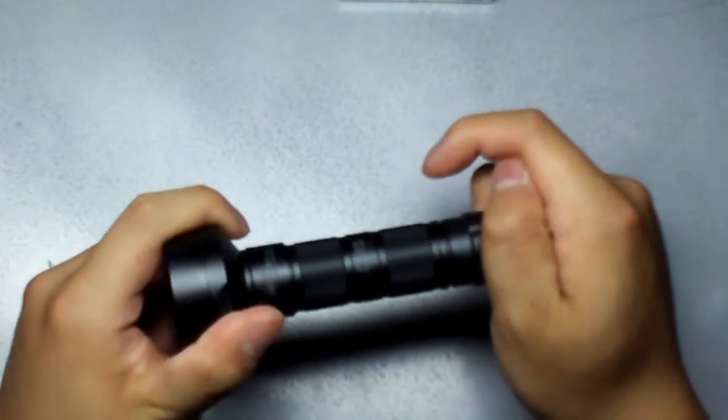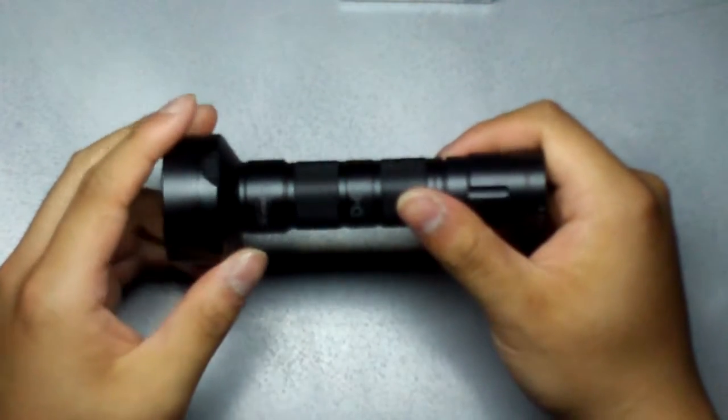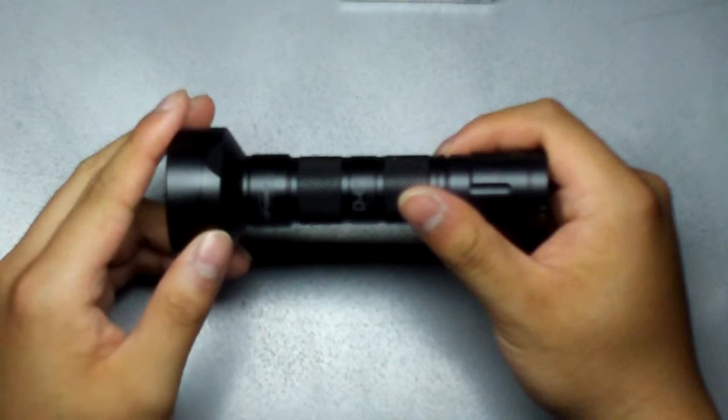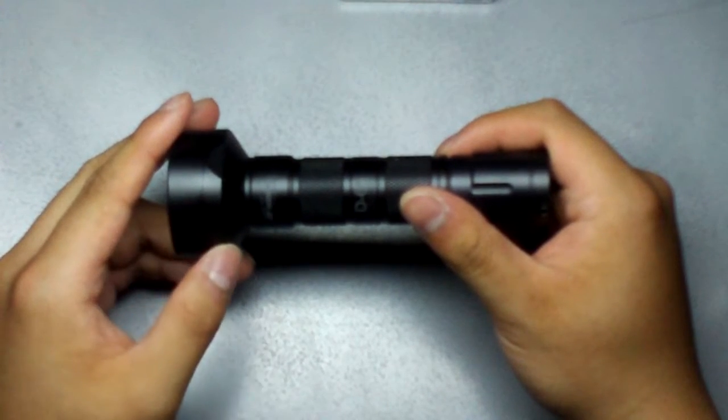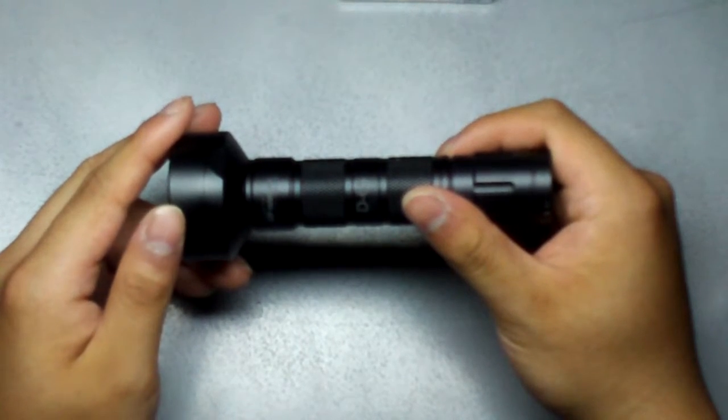It's supposed to output over 400 lumens on the max output. It has three different modes: High, or what they call sunburst, which is 100%, Medium, which is 50%, and Low, which is 10%.